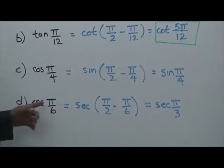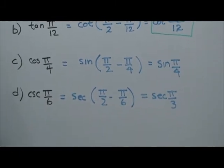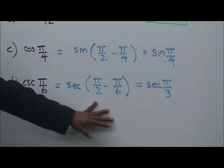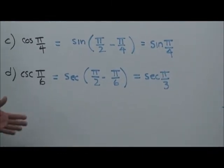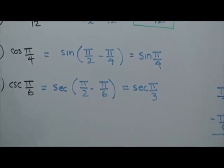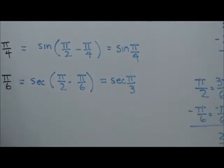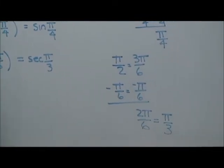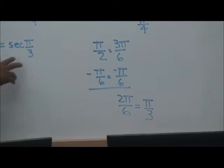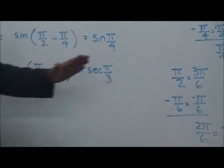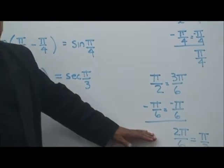Cosecant π over 6. Same thing. We get the co-function conversion, which is secant π/2 minus some angle θ. In this case, it's π/6. So π/2 minus π/6, right, would be secant π/3. And this is based on the work that's being shown here.